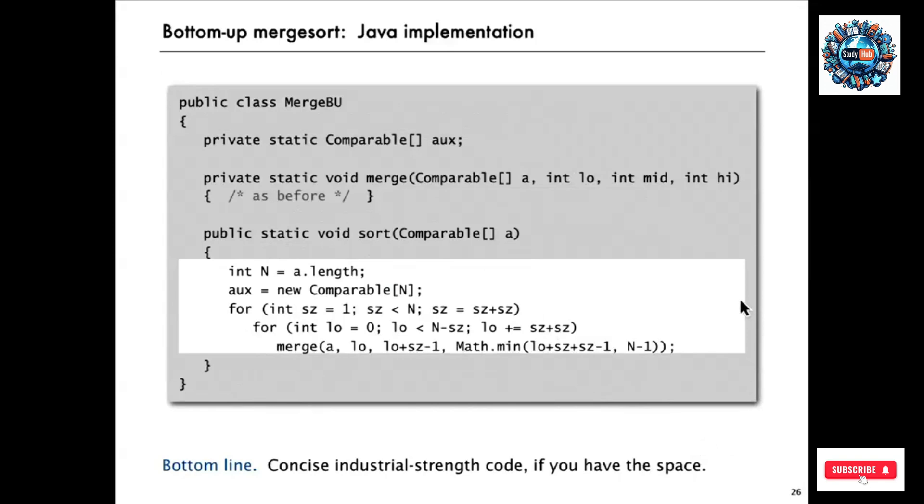It's extremely easy to code up as you can see from this code. We use the same merge code as before and we take a nested for loop. The first one is the size of the subarray. And this loop gets executed only log N times because each time we double the size of the subarray until we get to N.